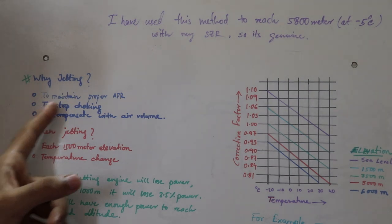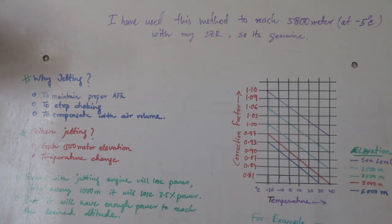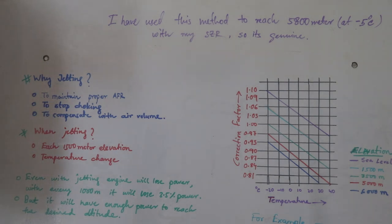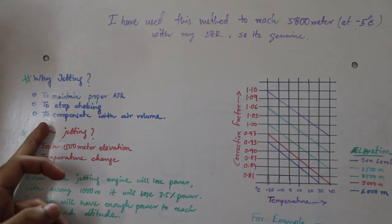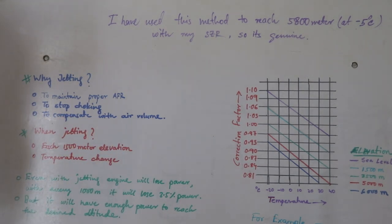The second point is to stop choking. Whenever you are delivering more and more fuel to the engine, the engine will become choked and the spark plug tip will become sooty black. After some time it will not spark well, so it will throw black smoke from the exhaust and will not perform good. You may not be able to reach the desired altitude. The third point is to compensate with air volume. Whenever you are elevating from sea level you get lesser volume of oxygen.